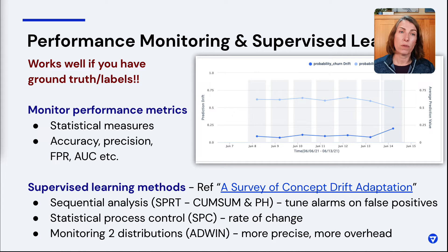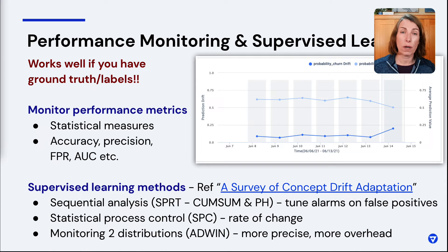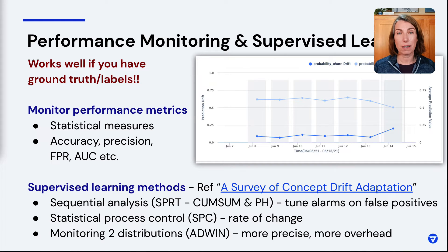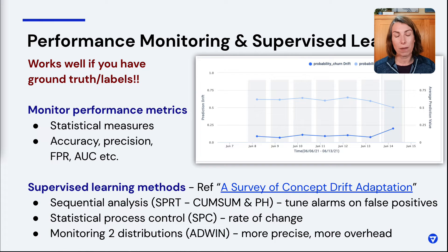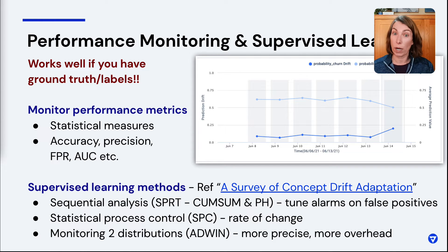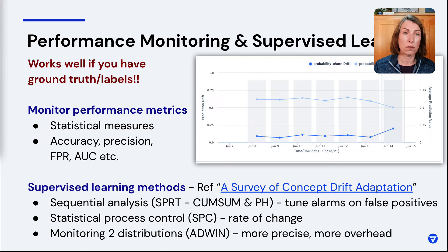Performance monitoring and supervised learning work great if you've got labels. You can put in easy metrics looking at statistical measures — accuracy, false positive rate, precision rate, whatever you want to measure. Tools including Fiddler have the ability to provide these low-hanging-fruit methods to monitor performance at all times. You can also develop your own. A survey of concept drift adaptation is a paper with a good overview of things like sequential analysis, statistical process controls — which let you look at the rate of change — and monitoring for multiple distribution changes, which can be precise but has more overhead.